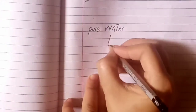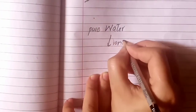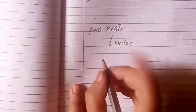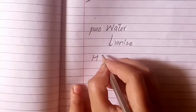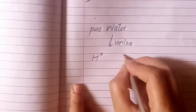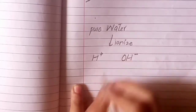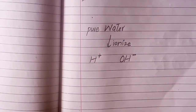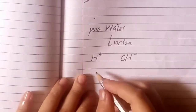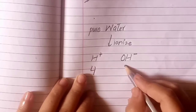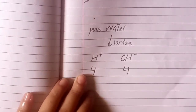Now, pure water ionizes and after ionization, two things are produced: one is hydrogen ion and one is hydroxide ion — H+ and OH-. For example, when water ionizes, 4 hydrogen positive and 4 hydroxide negative are produced.